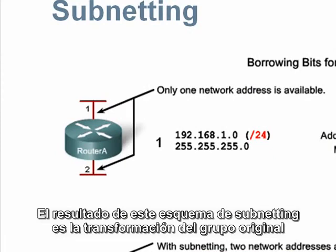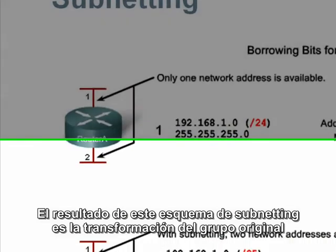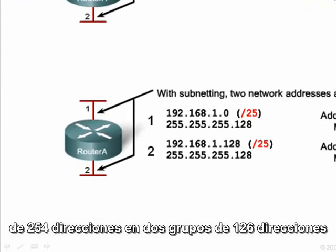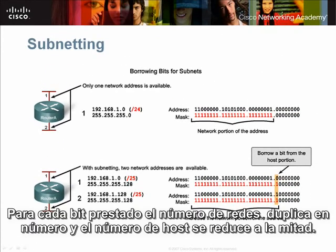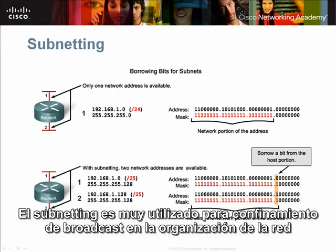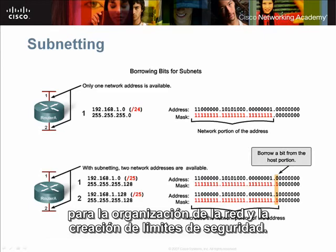The result of this subnetting scheme is the transformation of the original single group of 254 addresses into two groups of 126 addresses. For each bit borrowed, the number of subnetworks doubles and the number of hosts in each subnet is cut in half. Subnetting is useful for broadcast containment, network organization, and creating security boundaries.